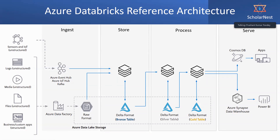Every lakehouse will land data in some internal storage — whether we call it a staging layer, a temporary landing zone, or a raw format layer. Think about it: real-time data is continuously coming and sitting here, while your batch data is also coming maybe every hour, every day, or every 15 minutes, landing continuously as files. Now if this is your source for the next level of processing, you have to implement incremental ingestion in this pipeline, right in this arrow.